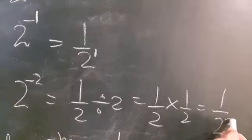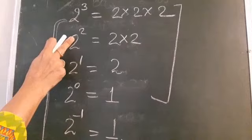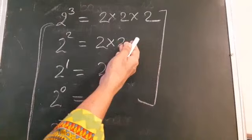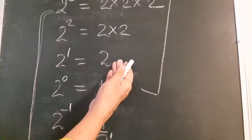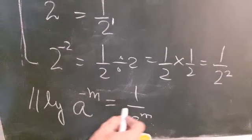We observe that the power is decreasing by 1: 2 raised to power 3, then 2, then 1, then 0, then minus 1. The previous number is always divided by base 2 to get the next number. This way, in general, a raised to power minus m equals 1 upon a raised to power m.